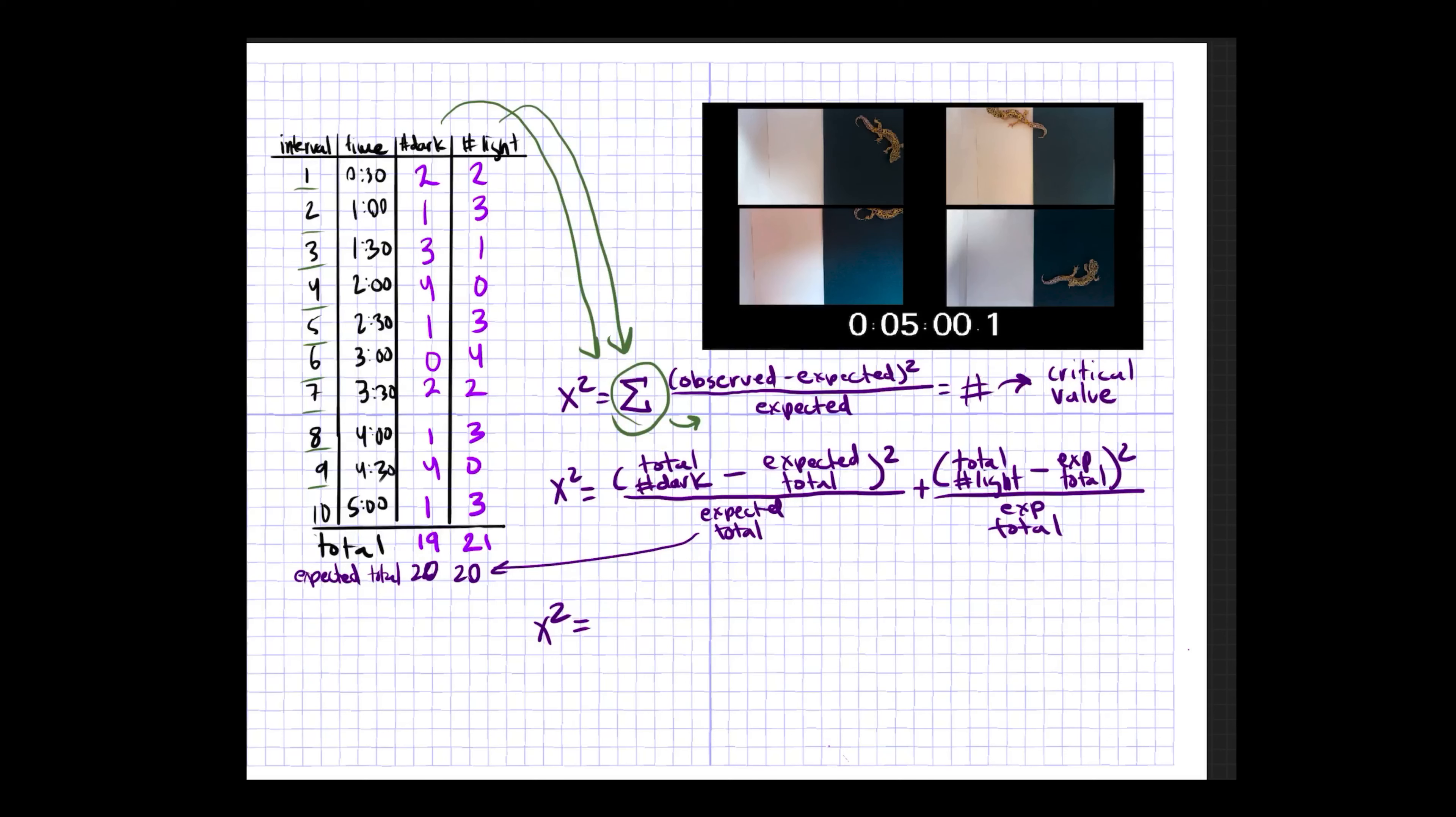So our total dark was 19, our expected total was 20. We're going to square that, over 20, plus our total number of light, which is 21, minus our expected total squared over 20. That's 1 over 20 plus 1 over 20, equal to 0.05 plus 0.05. So our critical value is 0.1.